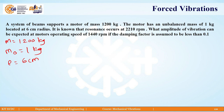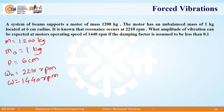What this means is that 2210 RPM is equal to the natural frequency. It has been asked what amplitude of vibration can be expected at the motor's operating speed of omega at 1440 RPM.